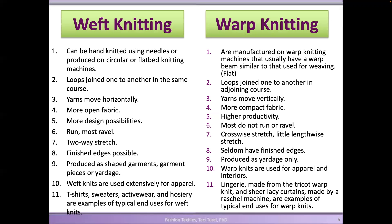Weft knit fabrics are produced as shaped garments — you can make fully finished garments in one shot on a knitting machine, so you can knit a sweater completely out of the machine. But warp knit fabrics only make yardage — they're just making fabric. We use weft knit fabrics mostly for apparel; warp knits are used for apparel and interiors. T-shirts, sweaters, activewear, and hosiery are good examples of weft knits, while warp knit materials cover areas like lingerie, sheer lacy curtains, and some types of sweaters.